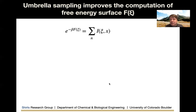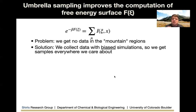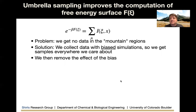If you just let a simulation go, you'll never visit the areas with high free energy — you're never going to visit the barriers. But a lot of times that's what you're interested in when calculating a reaction coordinate, and so we get no data in the mountainous regions. The solution, the most common one by far, is to collect data with biased simulations. We force the simulation to go to areas it's unlikely to visit, get samples everywhere we care about, and then remove the effect of this bias afterwards.